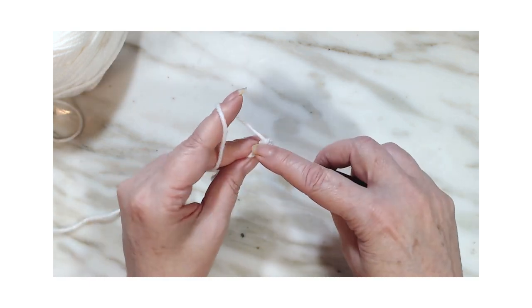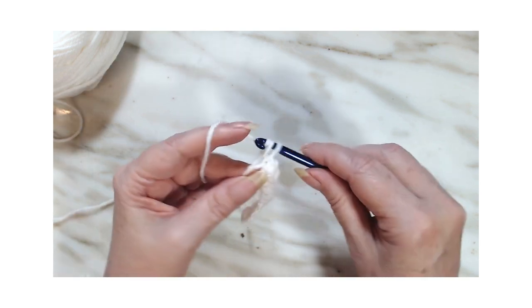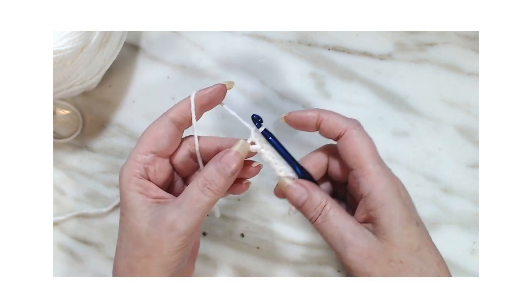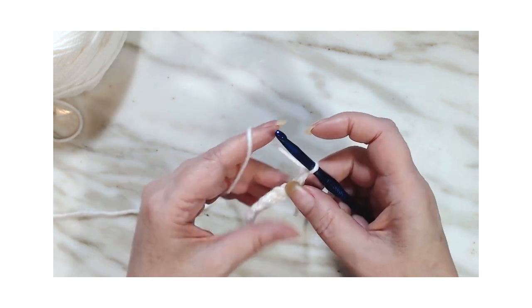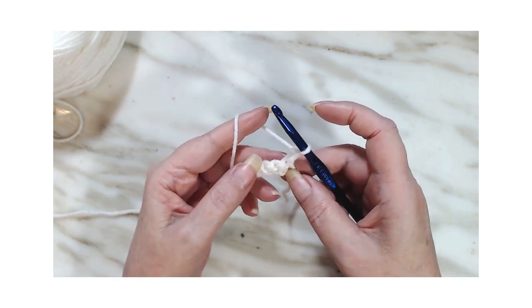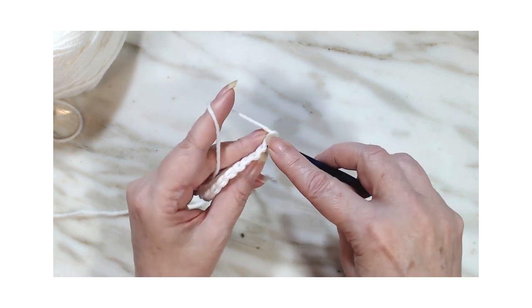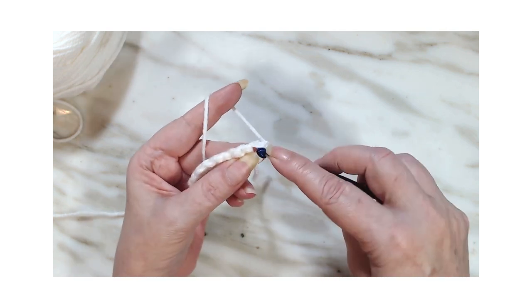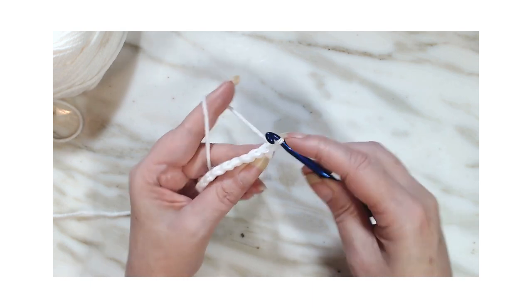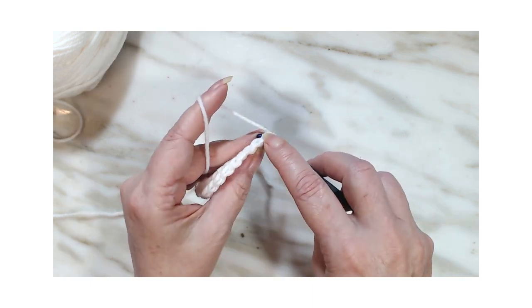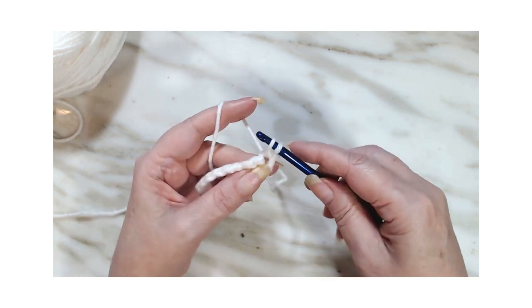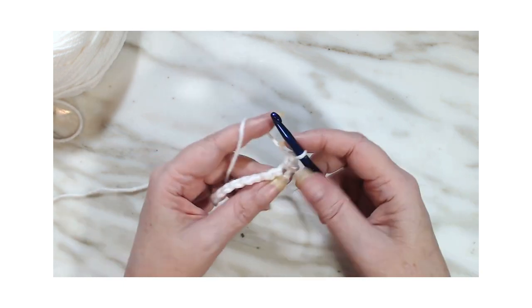So we're down here on our 10th one. We are going to do a chain one. Turn our work away from us. You need to go into two. So that's the front stitch and the back stitch at the beginning and the end. So we'll go through it and do a single crochet.